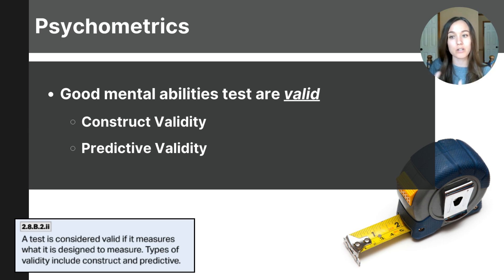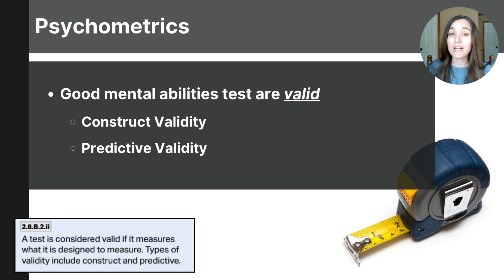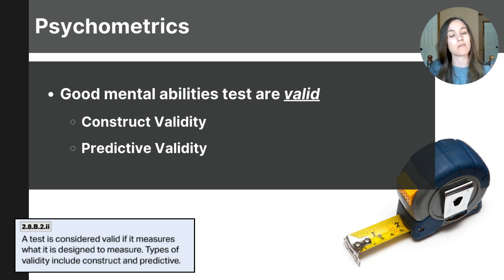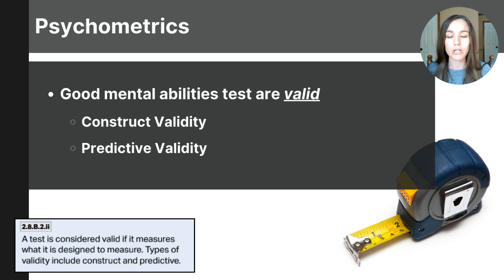Construct validity helps us understand if the test is measuring what it's intended to measure. For example, if a math test uses complex vocabulary that hinders students' understanding of the questions, it might not accurately measure their math abilities — instead, it might assess reading comprehension and vocabulary skills. This misalignment means the test lacks construct validity. The next important type is predictive validity, which measures how well a test can predict future performance or outcomes. For example, if a driver's test is valid, it should predict how well a student will perform on the road. If students who score high on the test are terrible drivers, it has weak predictive validity.